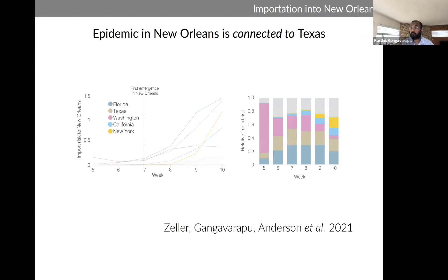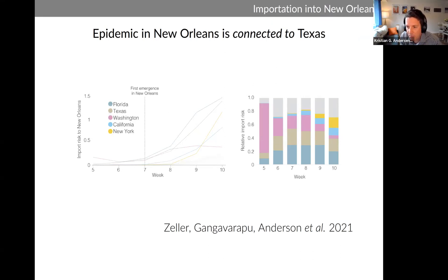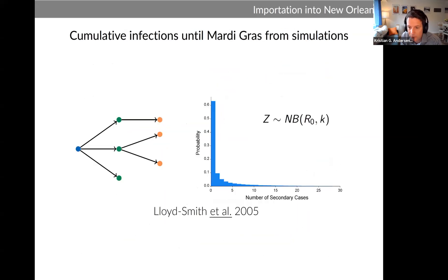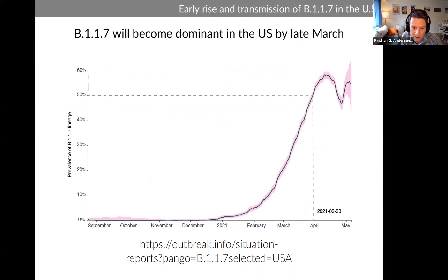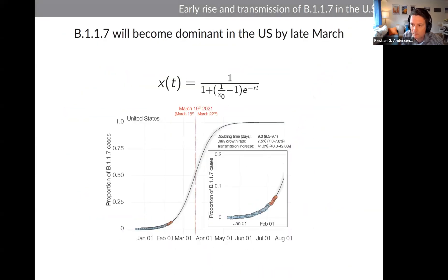The second question is from Doug Evans: can you comment on how the introduction of vaccines might impact the ability to model COVID-19 transmission? For example, when looking at B.1.1.7 we assumed to an extent a naive population — as we're rolling out vaccines, how might that limit our ability to do these types of analyses?